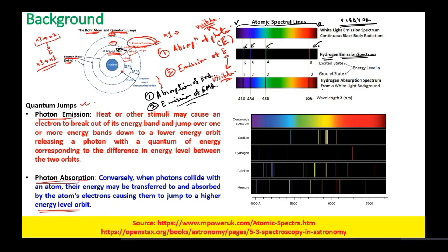On the contrary, in absorption spectral lines, within the same visible spectrum at the same levels where there was emission of hydrogen, at those same levels there will be absorptions. So both absorption and emission of electromagnetic radiation are wavelength specific.